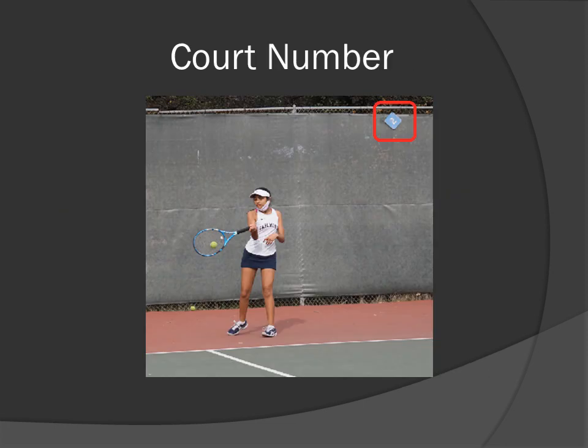Court number. This is an example of the picture you want to try and get — a picture of the player with the court number in the background. You can see the court number on the top of the windscreen in the background. Get one picture like this. Once you've got it, you can always crop out the court number in the back, but you've got this association. Now this player is on court two.